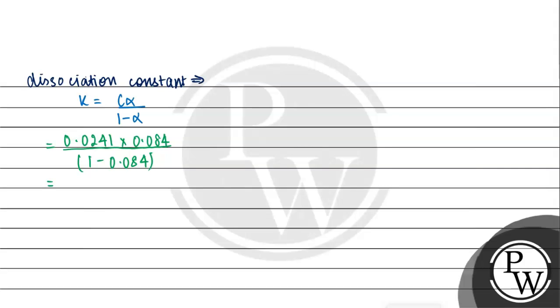When we calculate this, we get 1.86 into 10 to the power minus 5 mol per liter. This is the answer for dissociation constant.